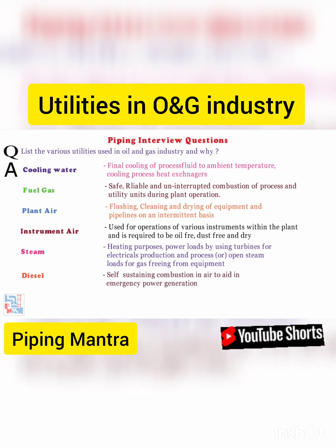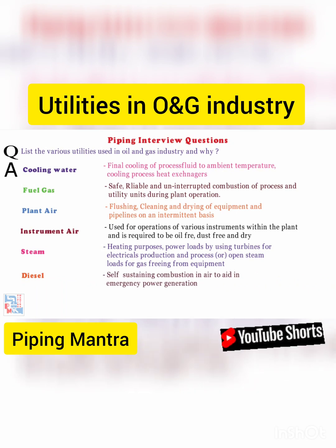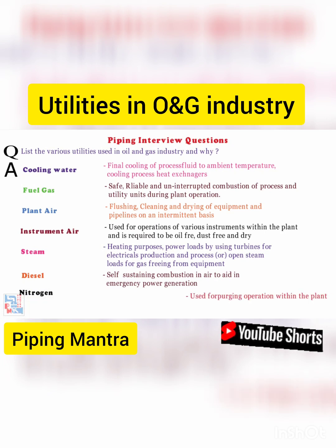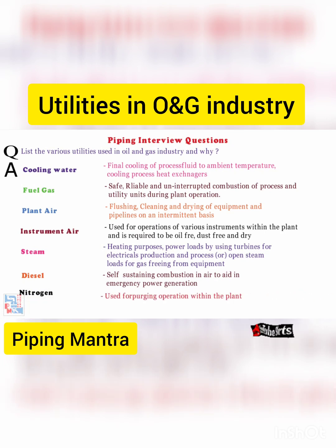6. Diesel Systems: Used for self-sustaining combustion in air to aid in emergency power generation. 7. Inert Gas Systems: Used for purging operations within the plant.